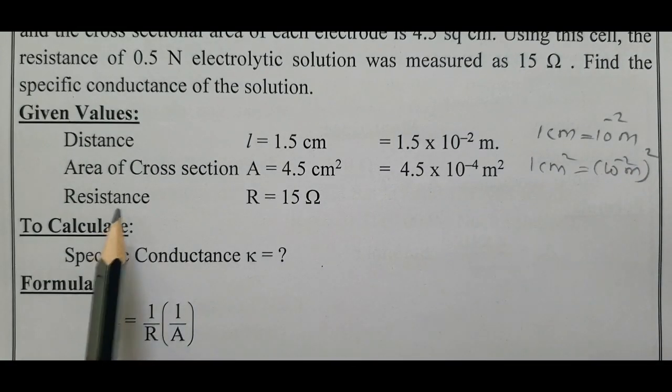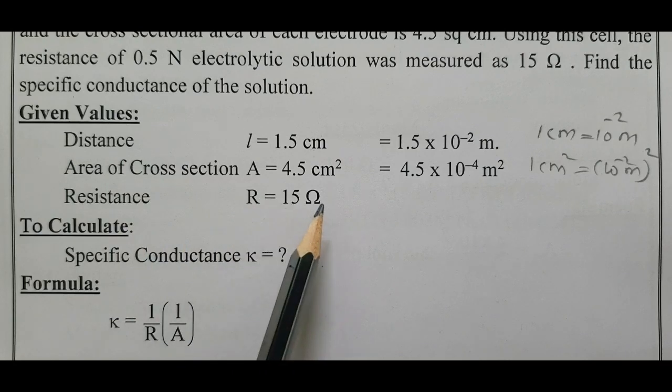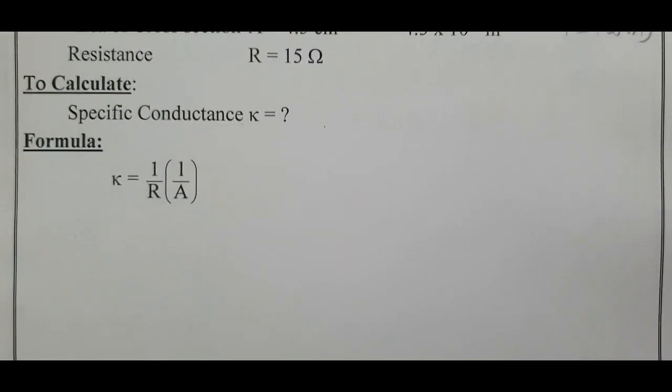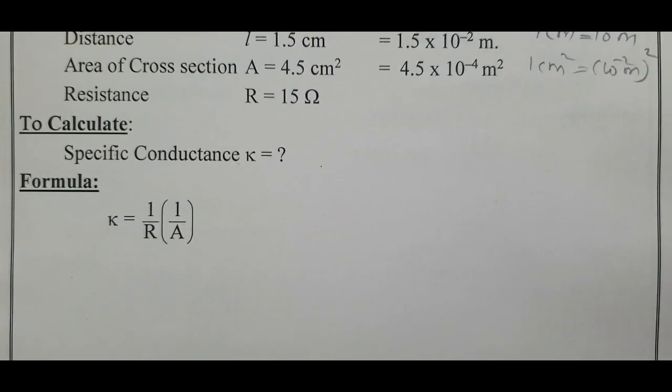Resistance value is also given as 15 ohm. To calculate specific conductance kappa, what is the formula? Kappa equals 1 by R into L by A.